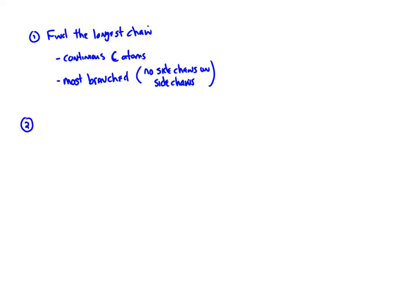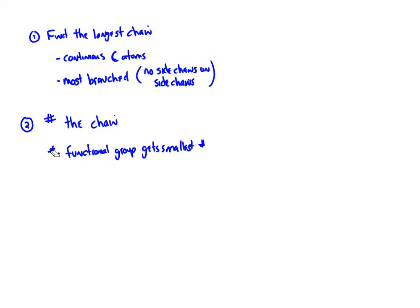Once you've identified your longest chain, you have to number it. The functional group always gets the smallest number. In this case we haven't used that rule yet because we've only talked about carbon-carbon single bonds — we haven't thrown in a double bond, triple bond, or alcohol group. I want it in your brain as background. Then number so that overall we have the smallest set of numbers.